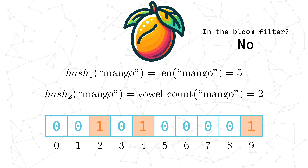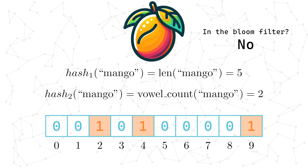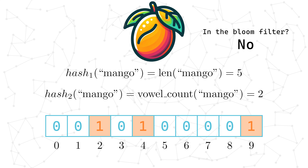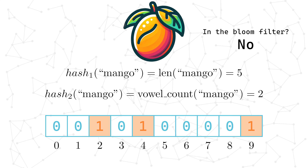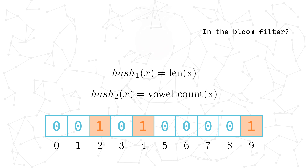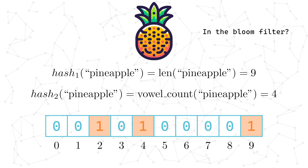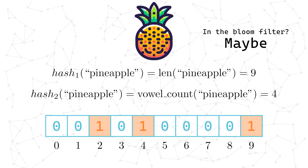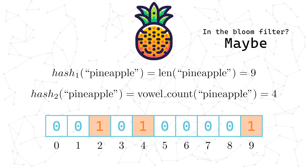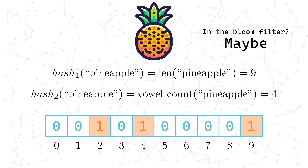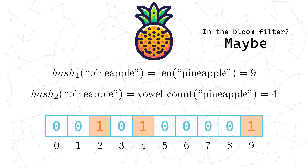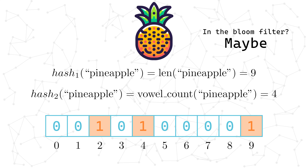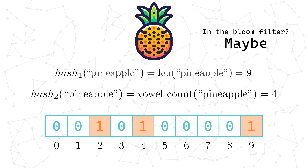Also, once we receive all of the hashes for a fruit, it doesn't matter what value came from which function — we only care about setting the bits at each of those positions to a 1 if they weren't already so, not in any particular order. Now things get really interesting. Let's insert pineapple, which has nine letters and four vowels. Because of kiwi and raspberry, index positions 4 and 9 already have a 1, even though we've never inserted pineapple before. This is called a false positive and is exactly why a bloom filter cannot ever return a definitive yes, only a maybe. Coincidentally, pineapple's hashes lie in the union of the hashes for kiwi and raspberry.